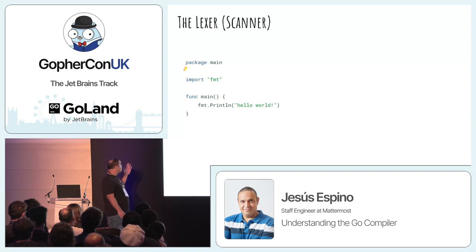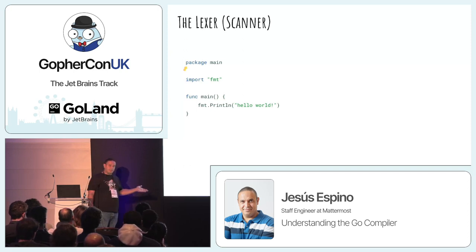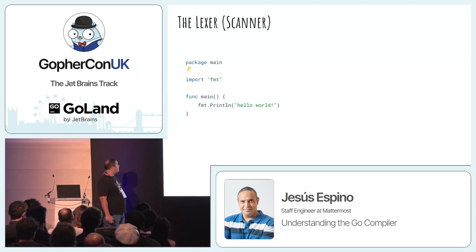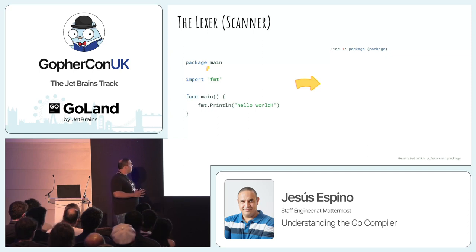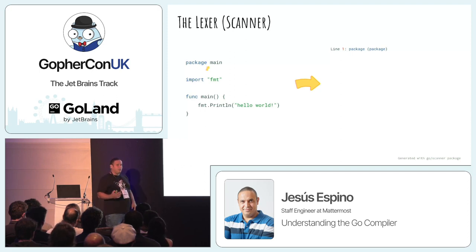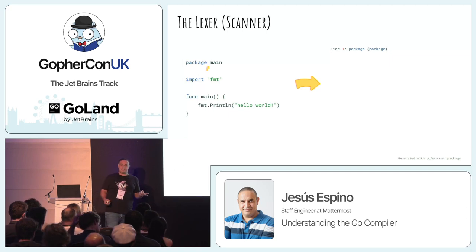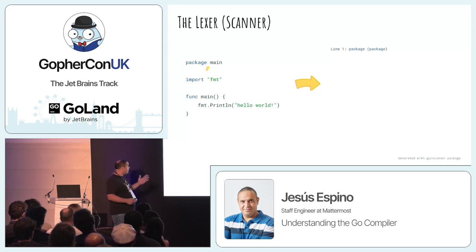This is our Hello World. Our scanner starts reading text character by character: p-a-c-k-a-g-e, and then it finds a space. It says: okay, that looks like an identifier — but do I have a keyword called 'package'? The answer is yes, so it returns the package token. It keeps going character by character.